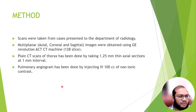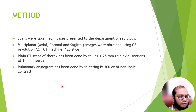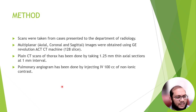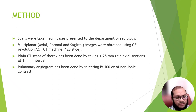Scans were taken from cases presented to the department of radiology. Multi-planar axial, coronal, and sagittal images were obtained using a GE Revolution ACT CT machine, 128-slice. Plain CT scans of the thorax were done by taking 1.25 mm thin axial sections at 1 mm intervals. The pulmonary angiogram was performed by injecting 100 cc IV of non-ionic contrast.